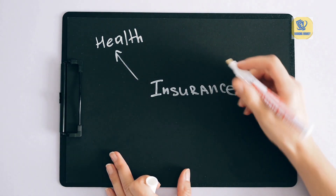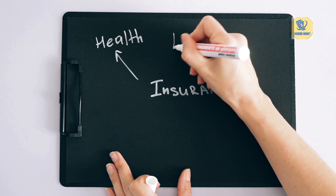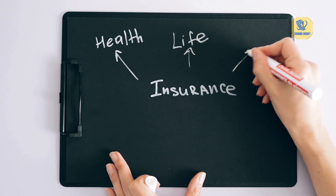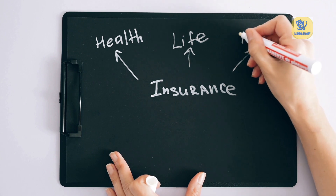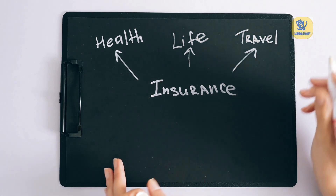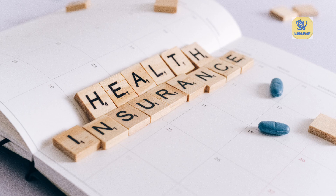Life insurance is a contract between an individual, the policyholder, and an insurance company. In exchange for regular premium payments, the insurance company agrees to provide a lump sum payment known as a death benefit to the policyholder's beneficiaries upon the policyholder's death. This financial payout is designed to provide financial support to the beneficiaries in the event of the policyholder's passing. There are several key components to understand about life insurance.